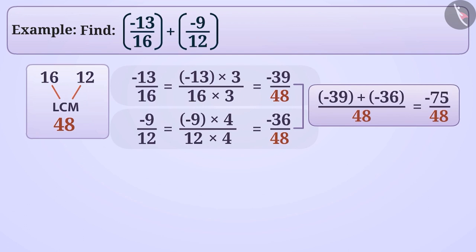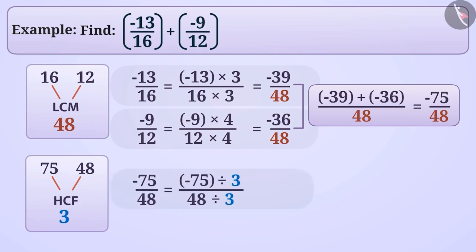To express it in the standard form, we see that the common factor of 75 and 48 is HCF 3, so we will divide both numerator and denominator by 3. The result of division will be minus 25 by 16. This is the answer to the given question.